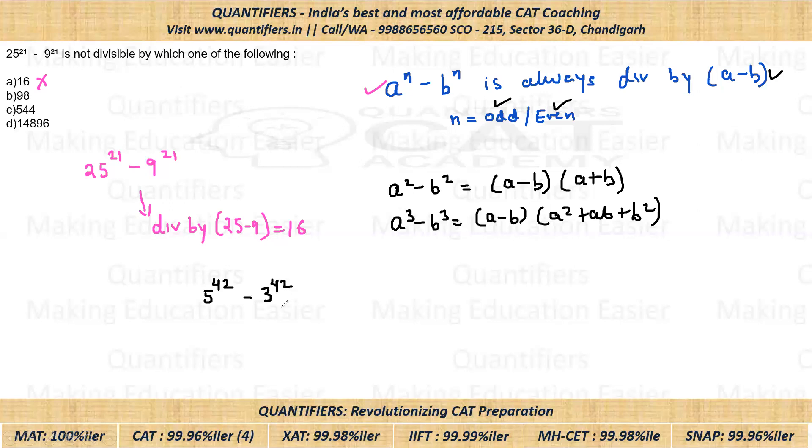Now students, if you pay attention, 42 is also a multiple of 3. 42 is a multiple of 3, so this thing can also be written as 5 cubed to the power 14 minus 3 cubed to the power 14. We can write it this way. What will this become? Basically we will get 125 to the power 14 minus 27 to the power 14.